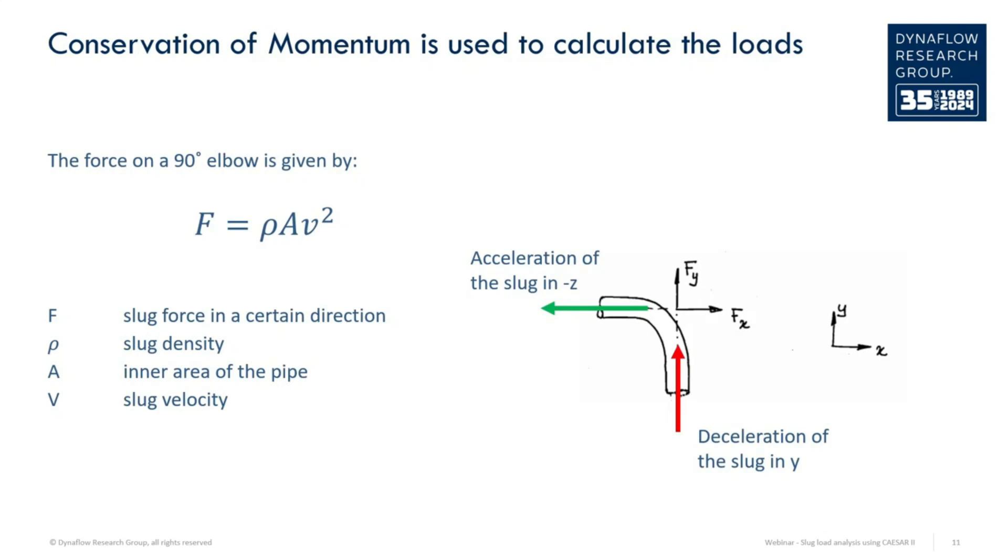Using the conservation of momentum, the slug force can be computed. The force on the elbow is caused by the momentum of the mass that is decelerated in one direction. This momentum is influenced by the velocity, the density, and the area.